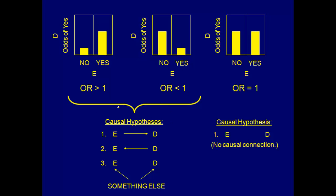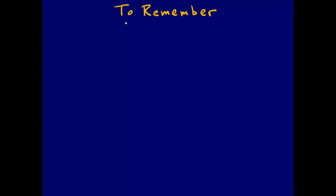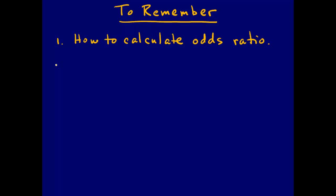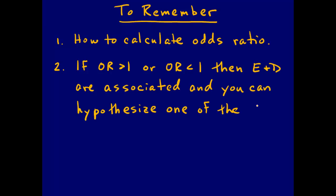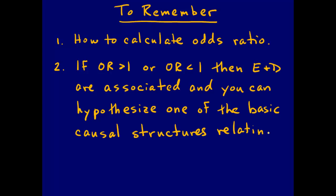To relate the odds ratio back to the basic causal hypotheses: if the odds of disease is higher among those exposed, the odds ratio is greater than 1; if higher among those not exposed, it's less than 1. If the odds ratio is greater than or less than 1, you have an association and can hypothesize one of the basic causal structures. If the odds ratio equals 1, there's no association and you hypothesize none of the causal relationships. The key takeaways: how the odds ratio is calculated, and that an odds ratio greater than or less than 1 indicates association.